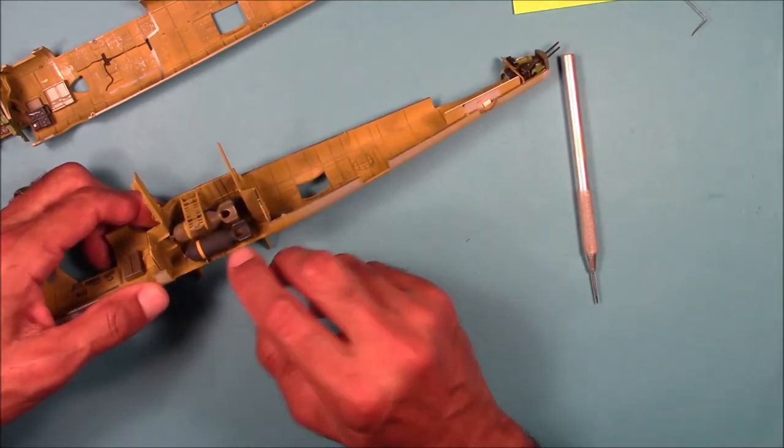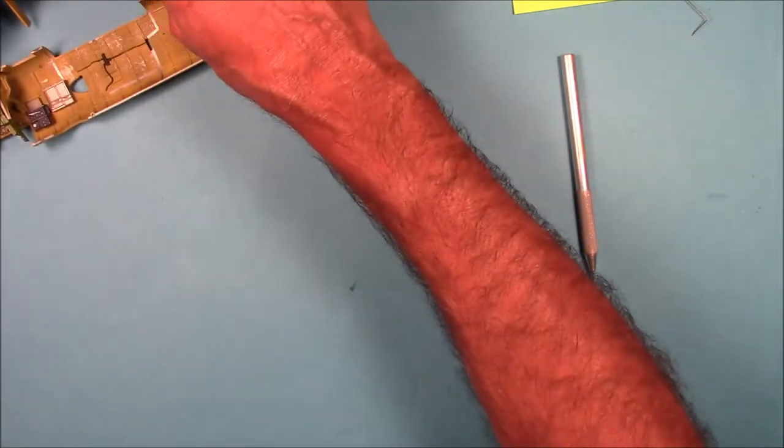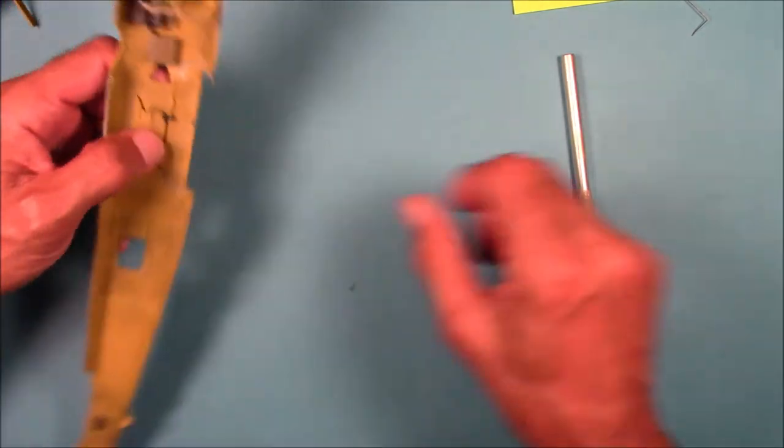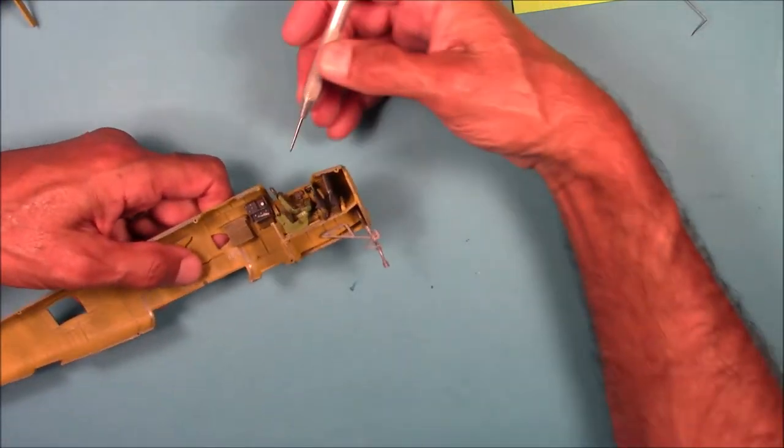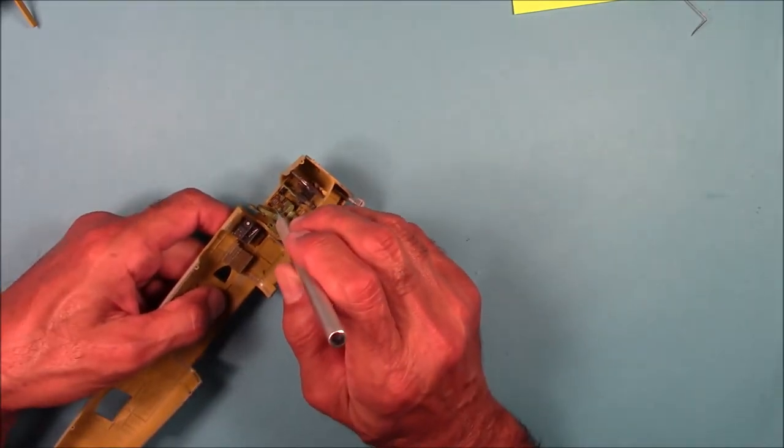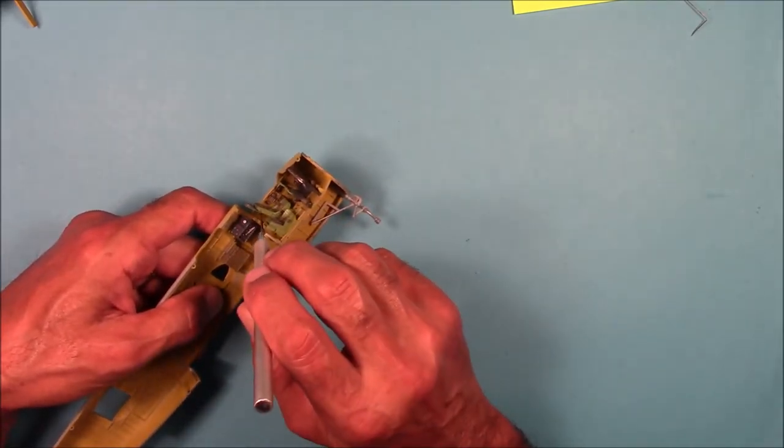I'll talk about how I attached the bomb racks, which I did last. On the port side, I followed the same procedure, and first I glued all of the instrumentation in place on the port side wall.